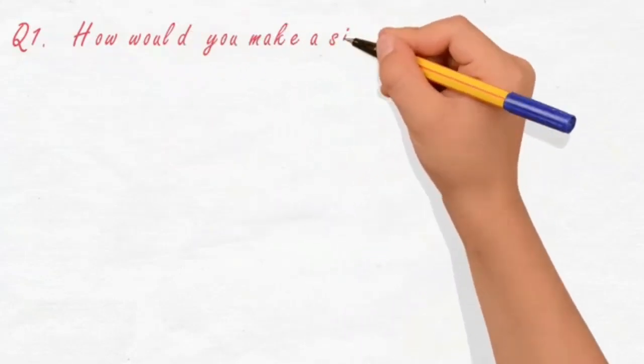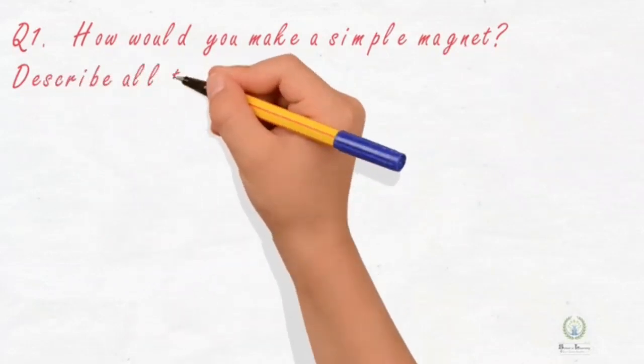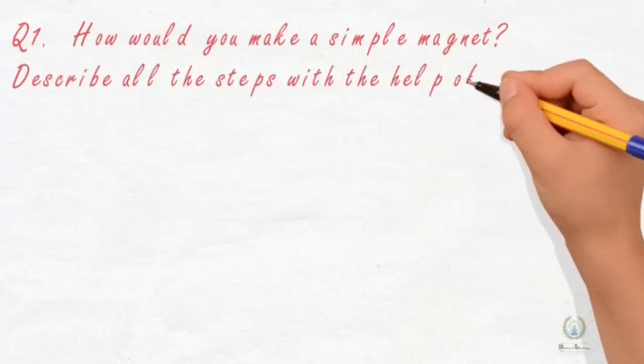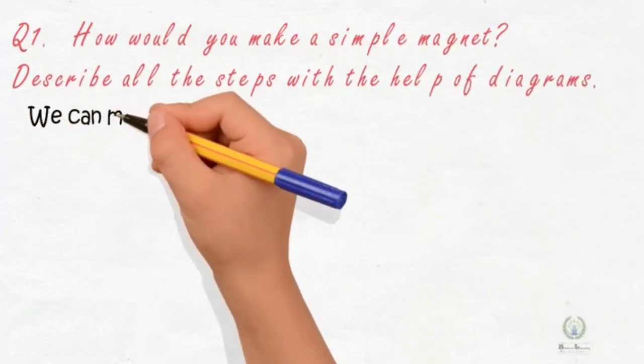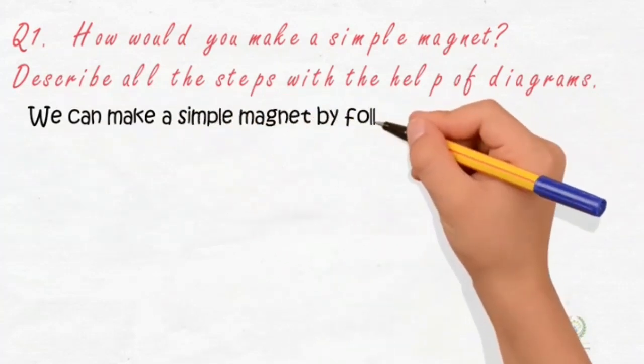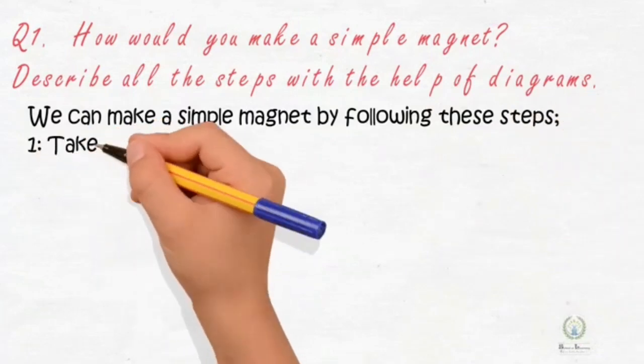Now we will discuss Unit 7 review questions. Our first question is: how would you make a simple magnet? Describe all the steps with the help of diagram.